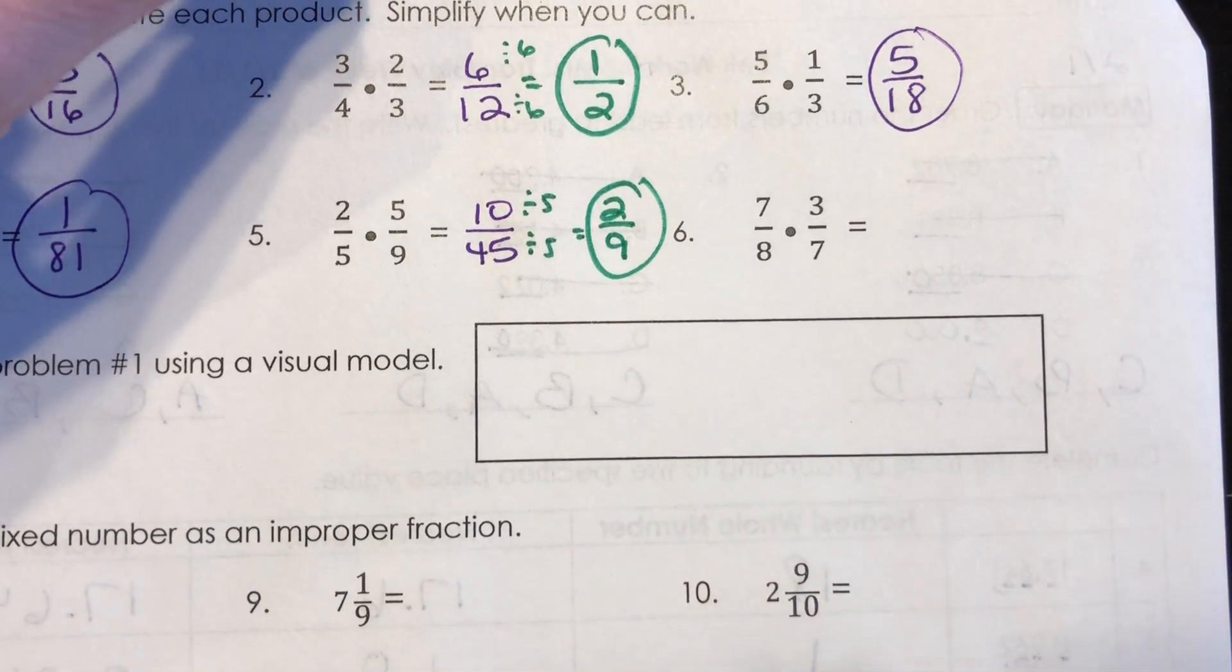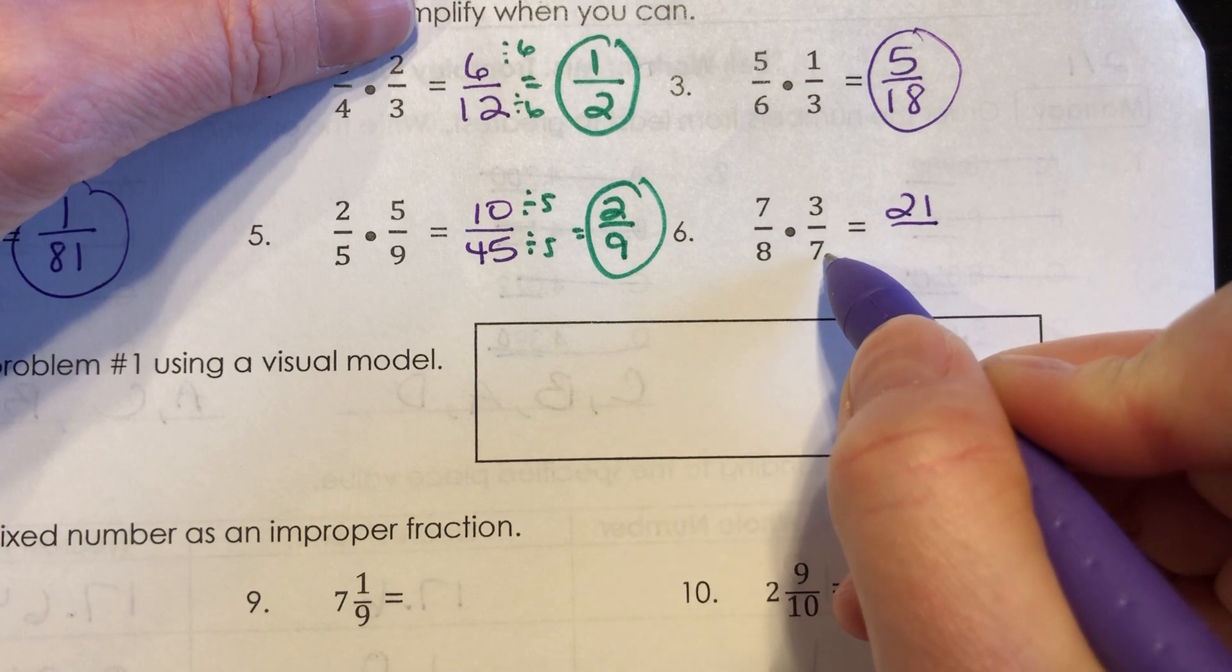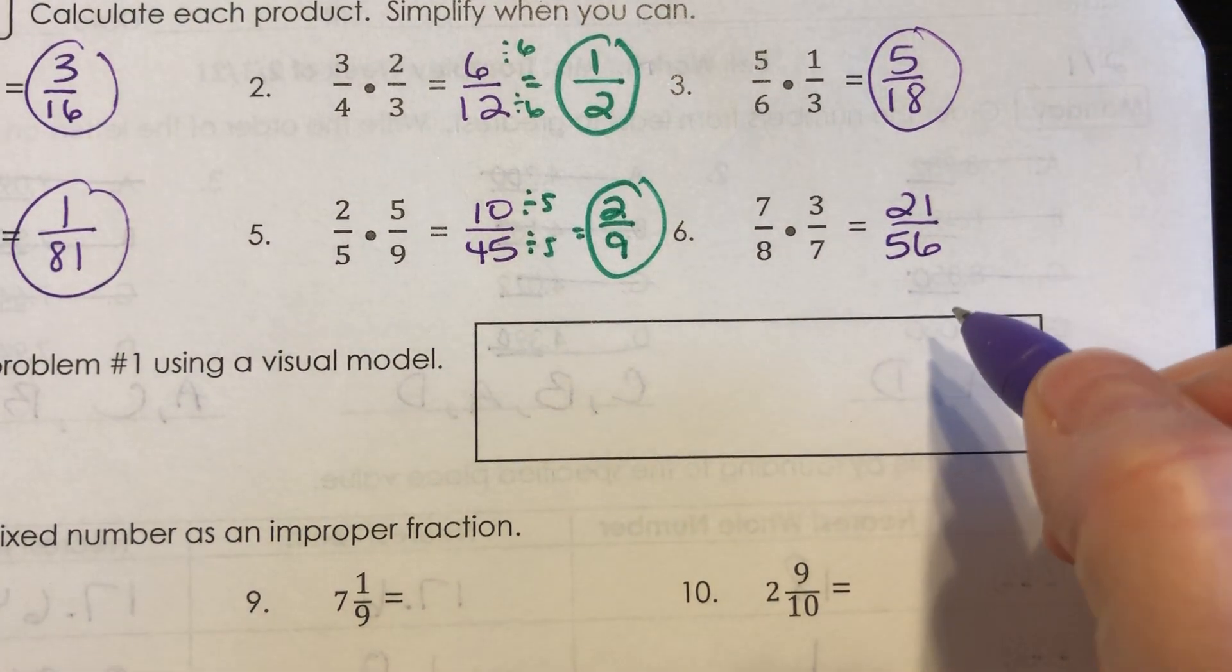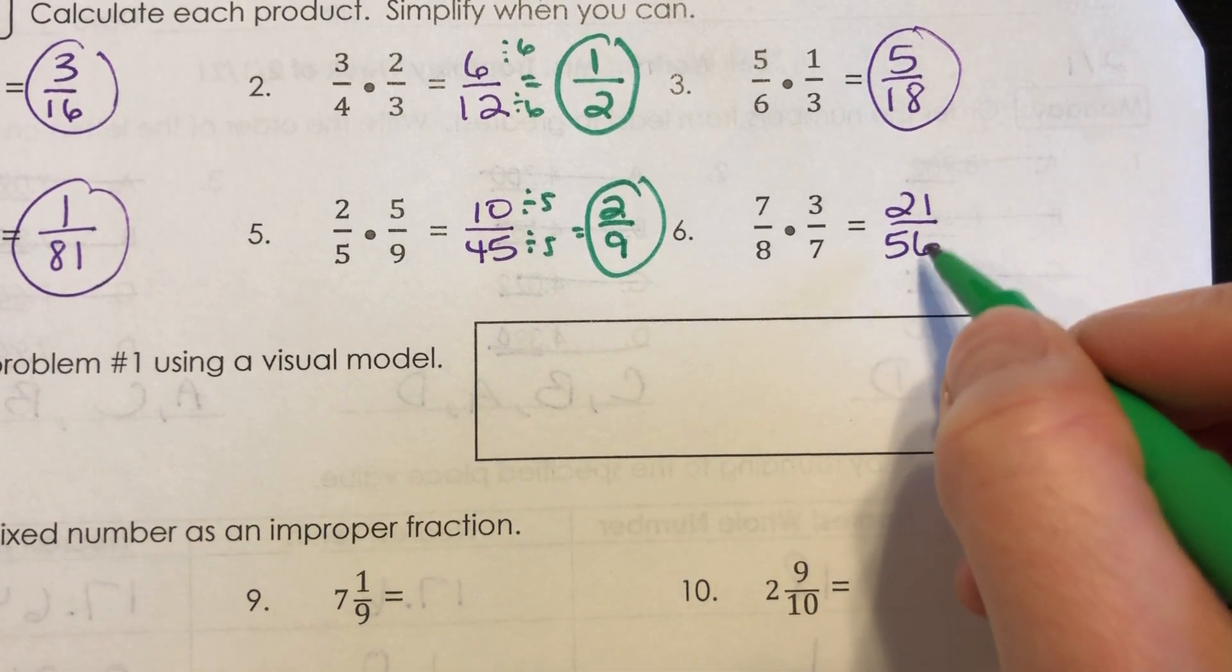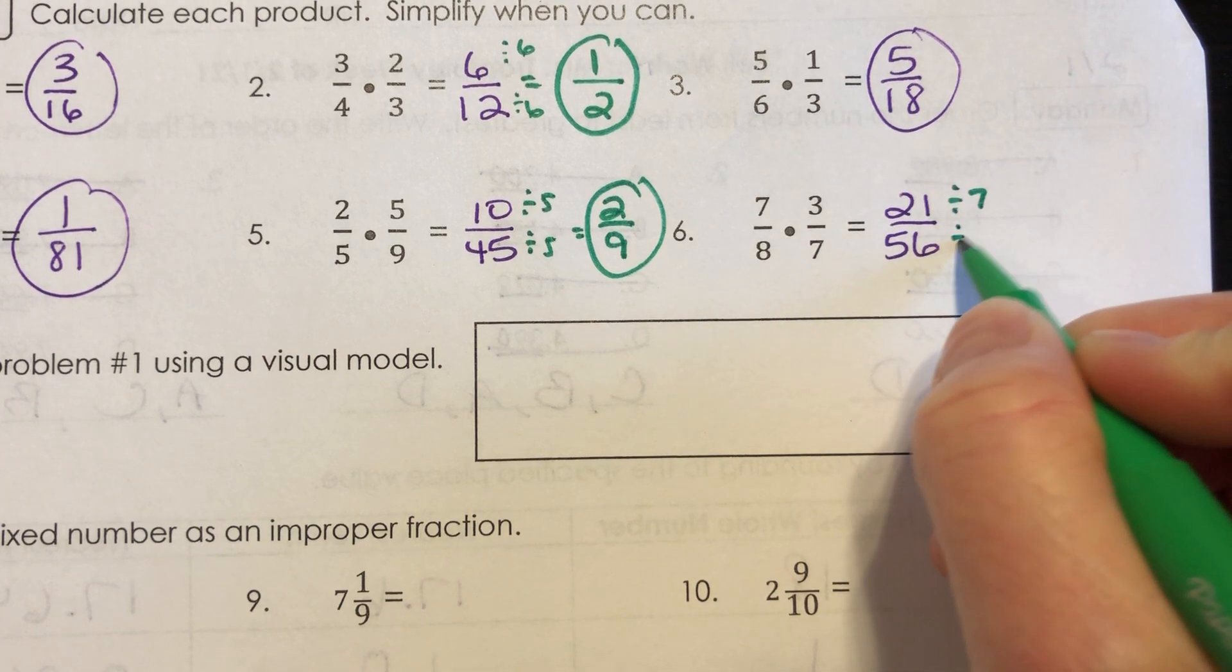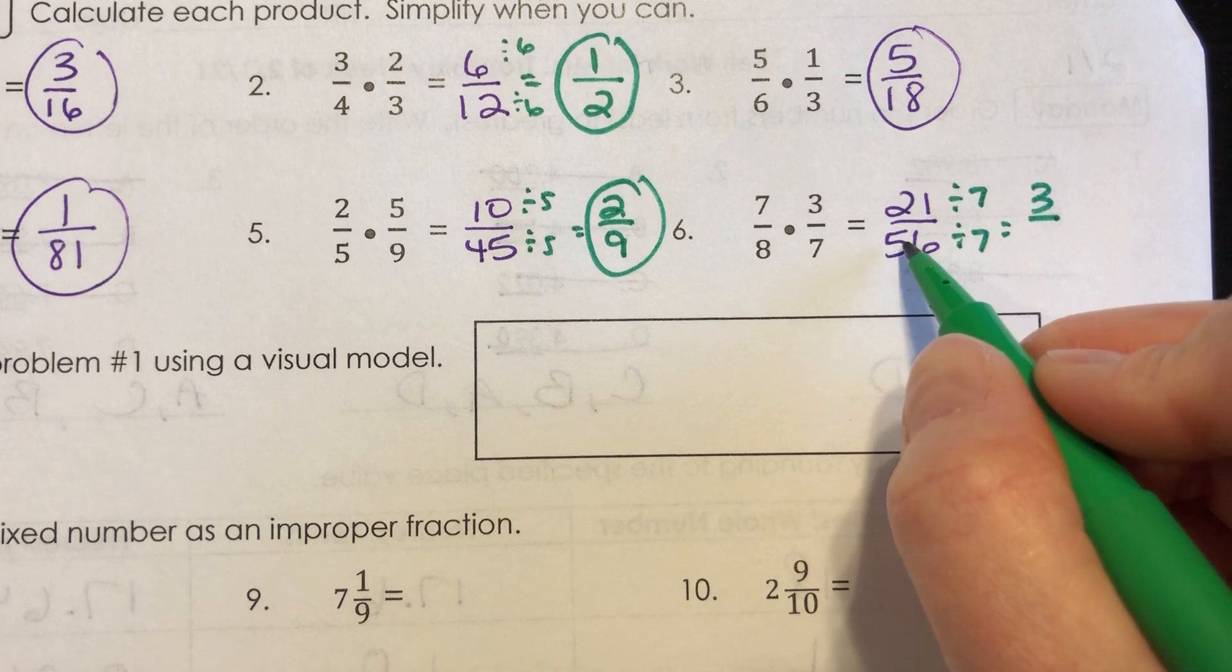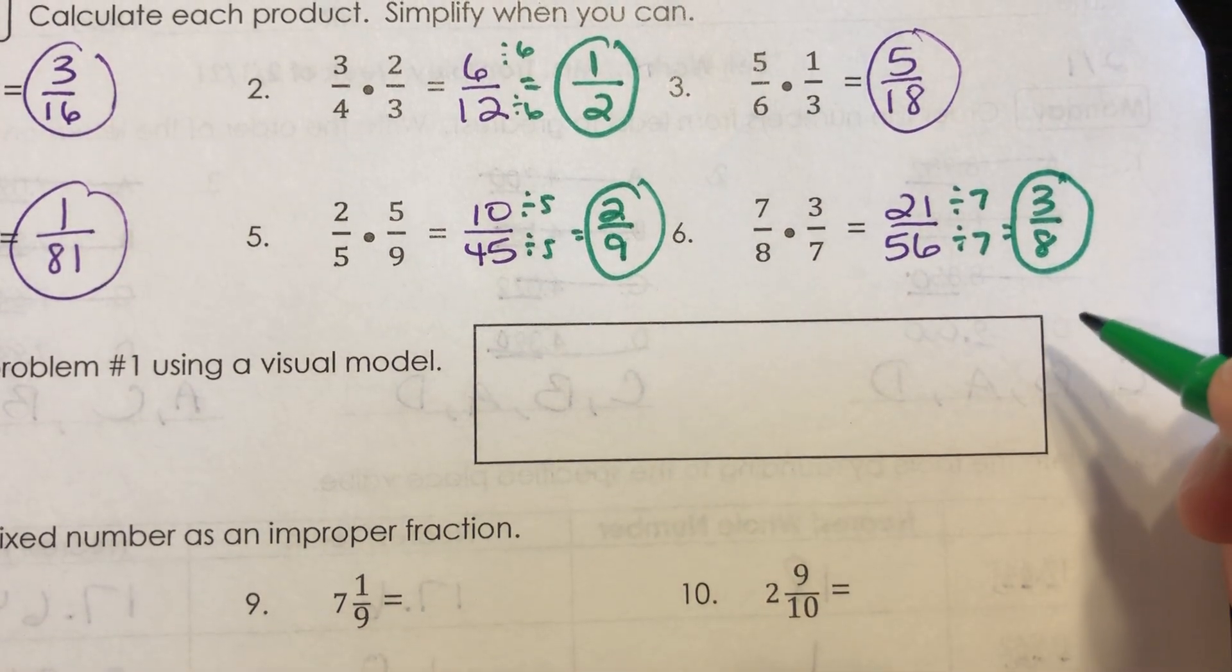And number 6, 7 times 3 is 21, 8 times 7 is 56. Now 21 and 56 are both multiples of 7, so I know that at least 7 will go into both of these. So I'm going to go ahead and divide that by 7 and this by 7. 21 divided by 7 is 3, and 56 divided by 7 is 8. So 3 eighths is what you should have.